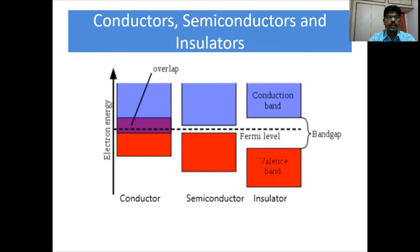In a conductor, there is an overlapping of valence band and conduction band — there is no energy gap in the case of a conductor, so they have a large number of free electrons. In the case of semiconductors, there is a small energy gap between the valence band and the conduction band. Whereas, in the case of insulators, there is a large energy gap between valence band and conduction band.